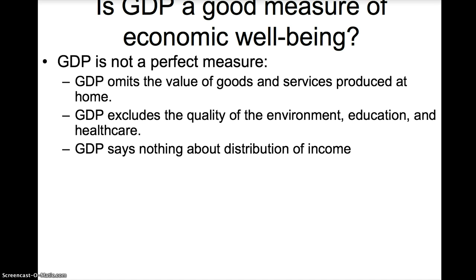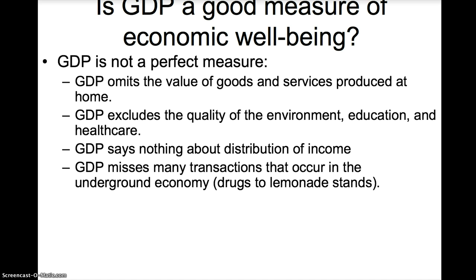GDP says nothing about the distribution of income. Calculating GDP does not tell us the size of the middle class, or how income is divided between the upper, middle, and lower classes. Lastly, GDP misses many transactions that occur in the underground economy — everything from illegal drugs to lemonade stands. If a transaction does not occur legally, it is not included in GDP.